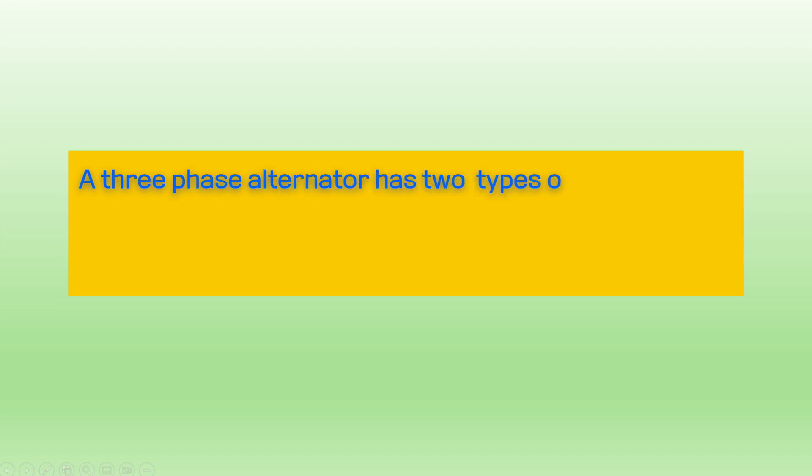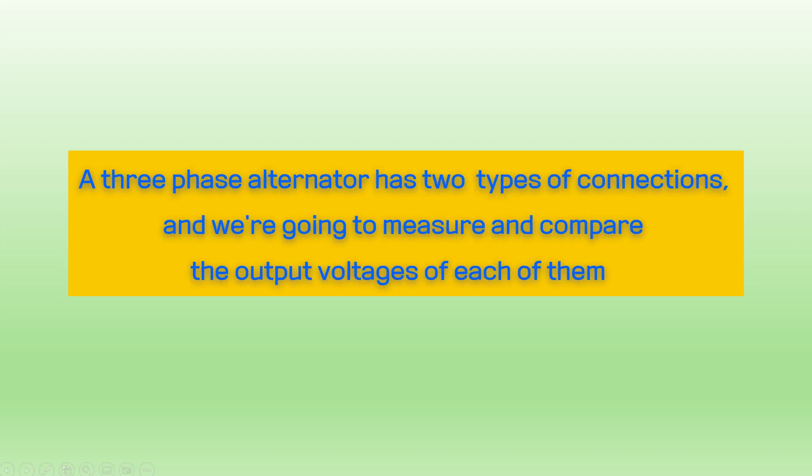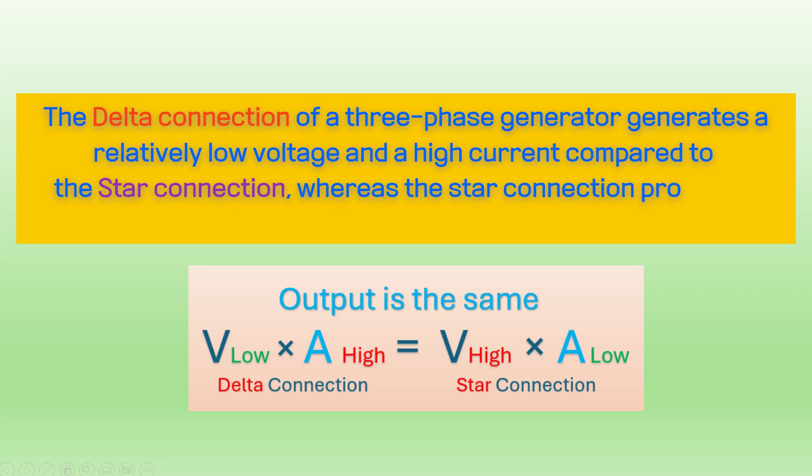A 3-phase alternator has two types of connections, and we're going to measure and compare the output voltages of each of them. The delta connection of a 3-phase generator generates a relatively low voltage and a high current compared to the star connection, whereas the star connection produces a high voltage and a low current.